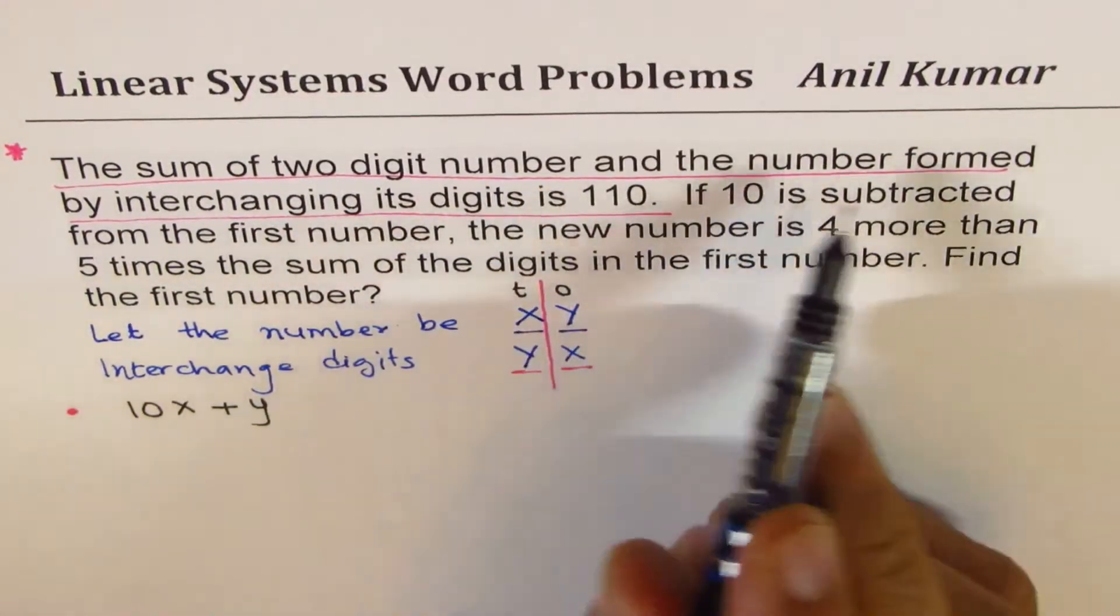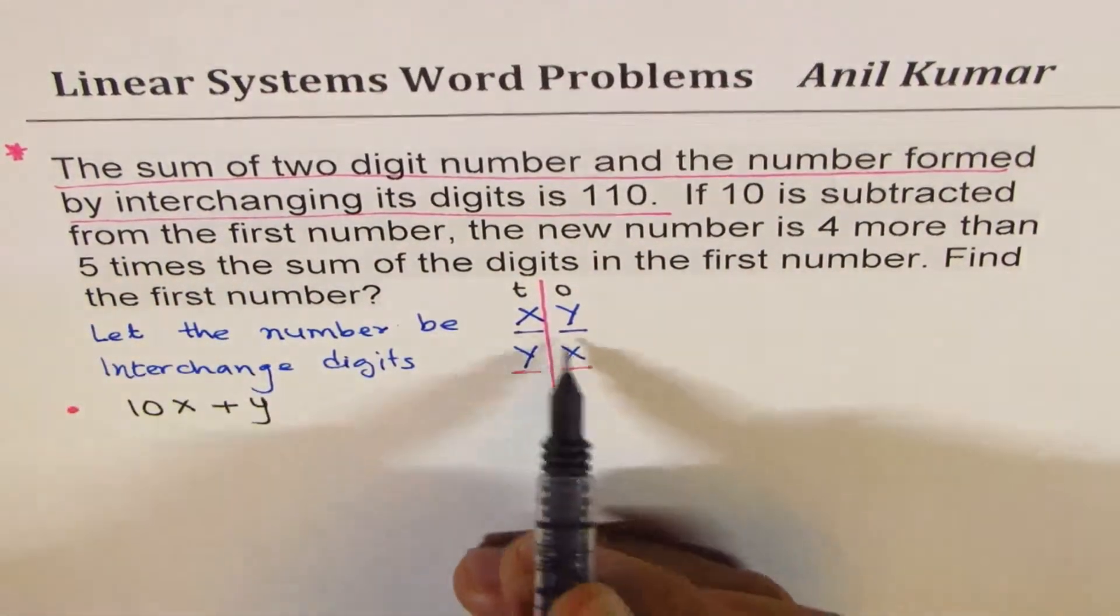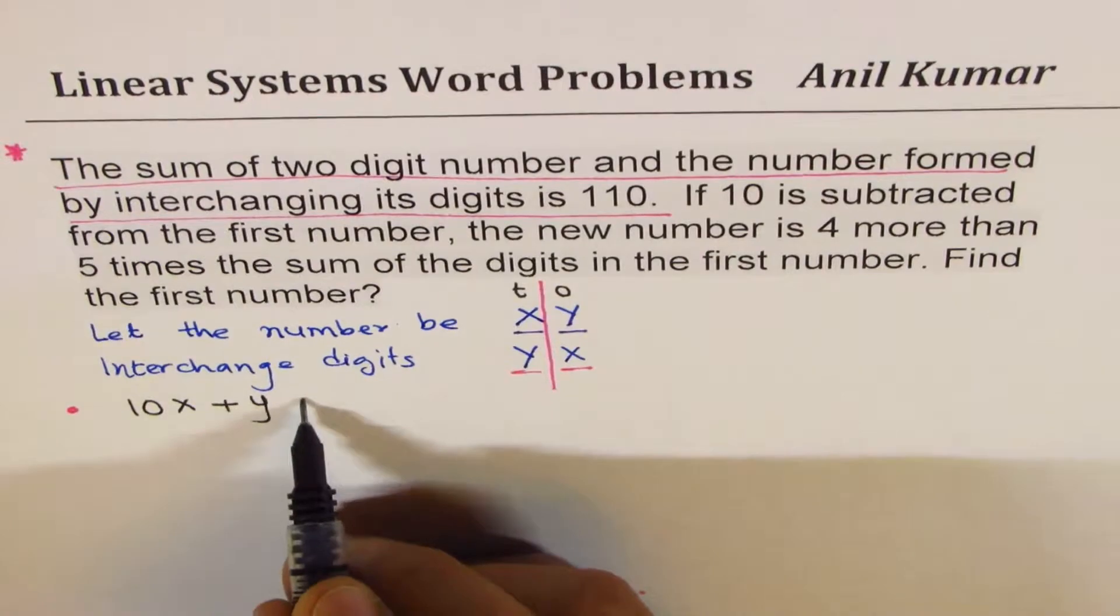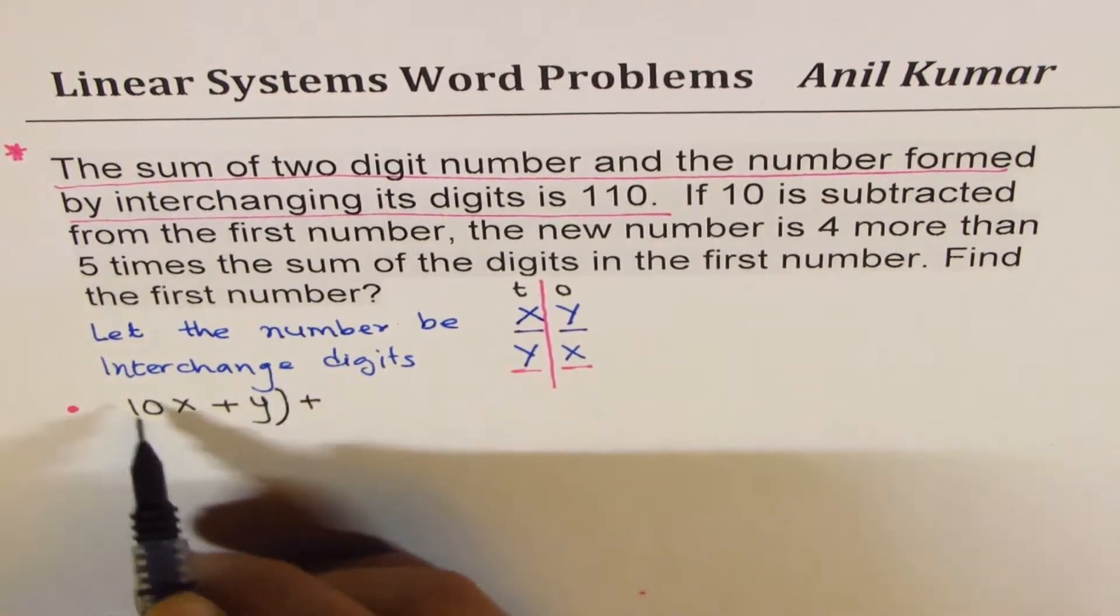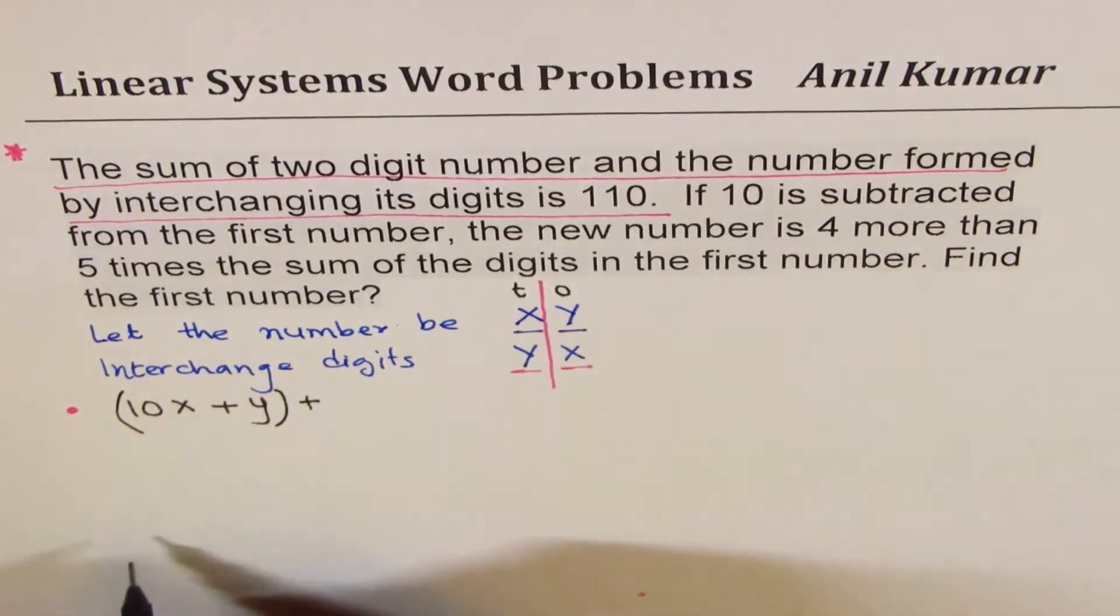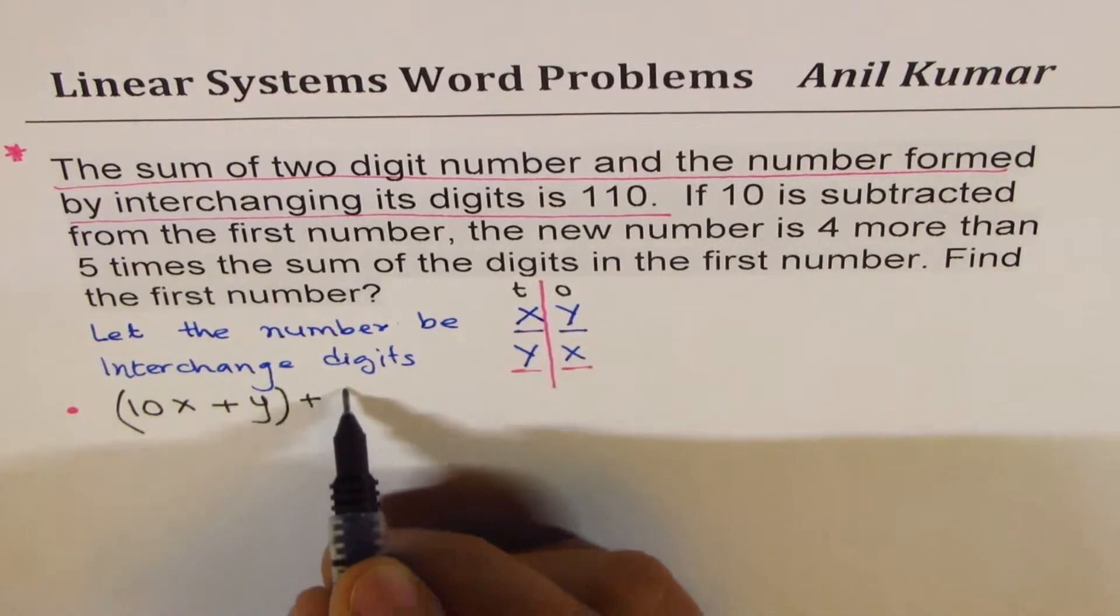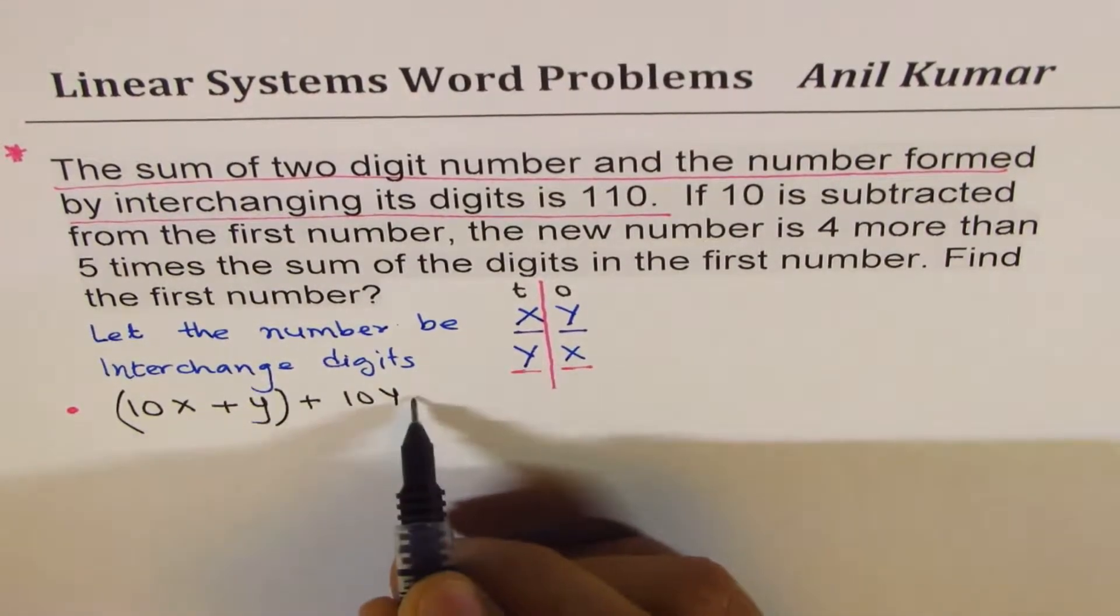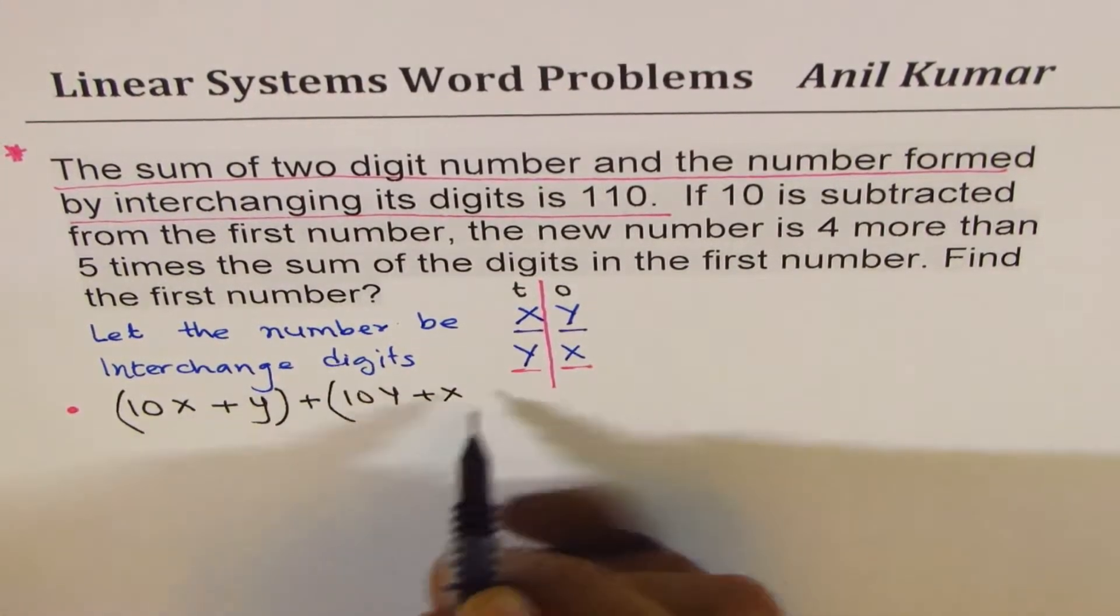Sum of two digit number and the number formed by interchange, this number value will be, when you add this, so this is your sum, this is your first number. The second number is 10 times y plus x.